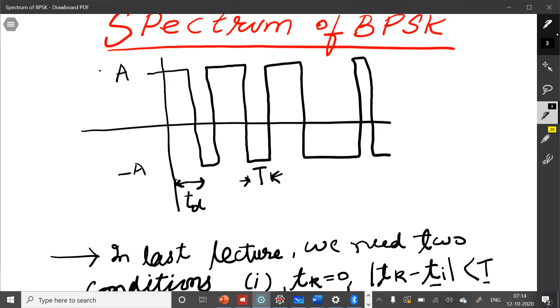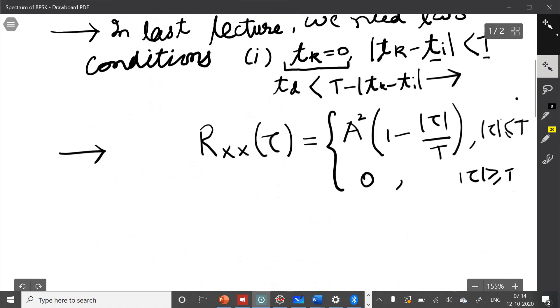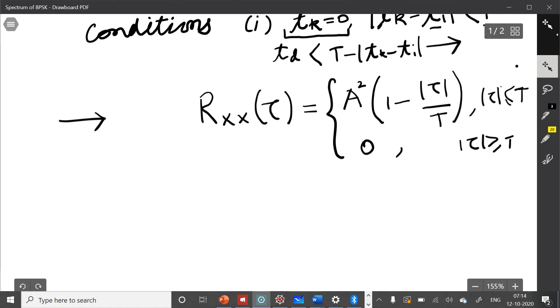So it means that as long as you choose these two samples that their difference is tau, then the autocorrelation function has this value. Now, we want to compute, you remember that our target is to get some idea of bandwidth. For bandwidth, we need its Fourier transform.